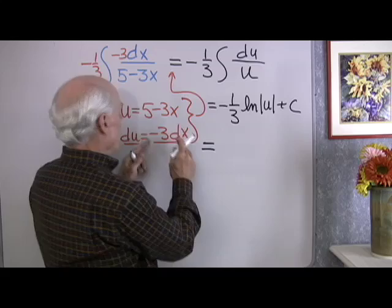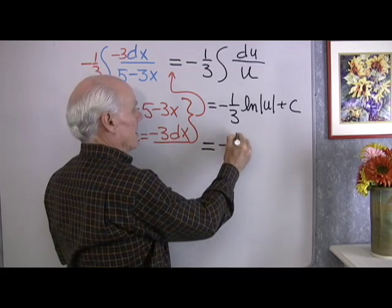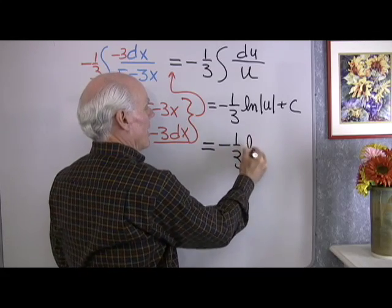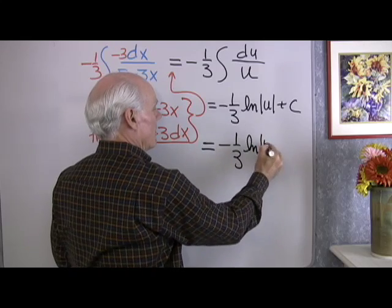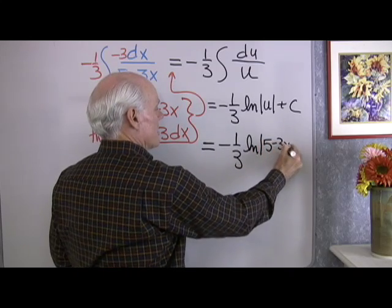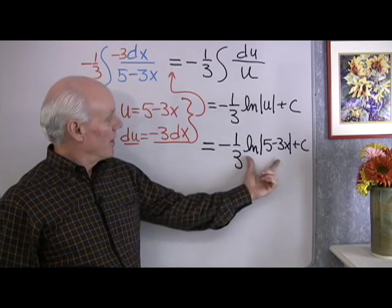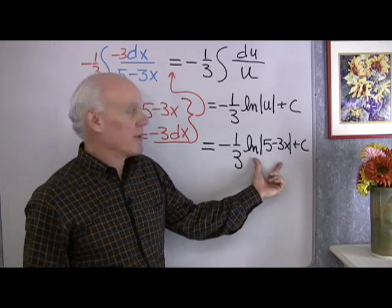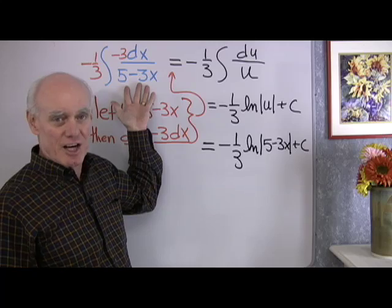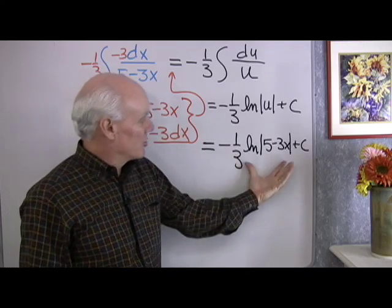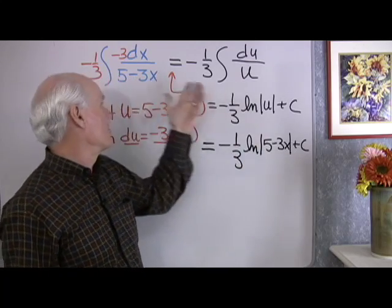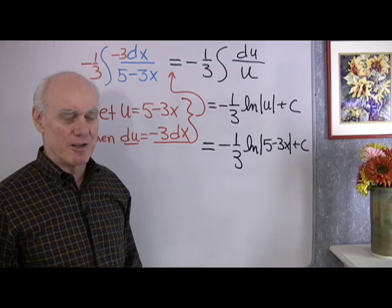Now I'll back substitute, here's my u, 5 minus 3x, negative 1 third natural log absolute value 5 minus 3x plus c. So there's my integral right here, it comes out to be this, this is the anti-derivative of this thing that I started with. I could check this by differentiating this, you'd see I'd get exactly what I started with right there.